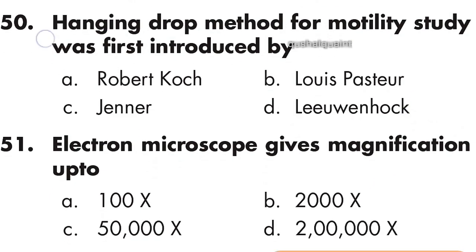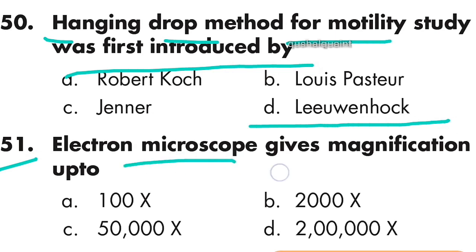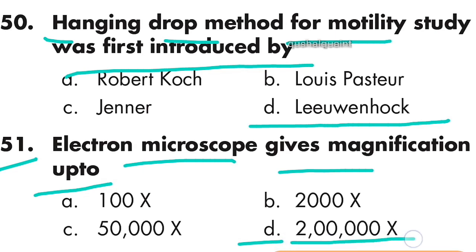Question number 50: The hanging drop method for motility study was first introduced by Leeuwenhoek. Option D is right — Leeuwenhoek. Question number 51: An electron microscope gives magnification up to 2 lakh times. Option D is right — 2 lakh times.